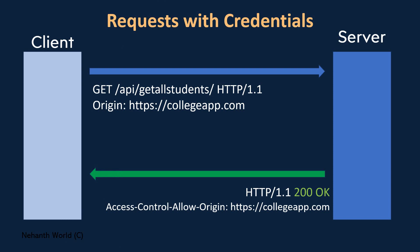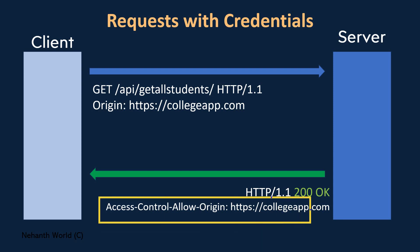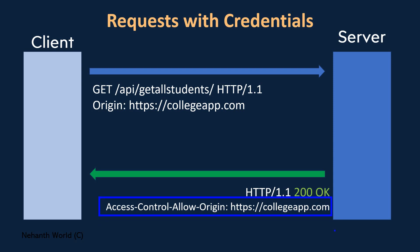This one is a request with credentials. Everything is the same as a simple request, but here you cannot put star in the place of the origin name. When you are using a request with credentials, you have to put a specific domain name — you cannot use star or allow all. That is one important thing to notice here.